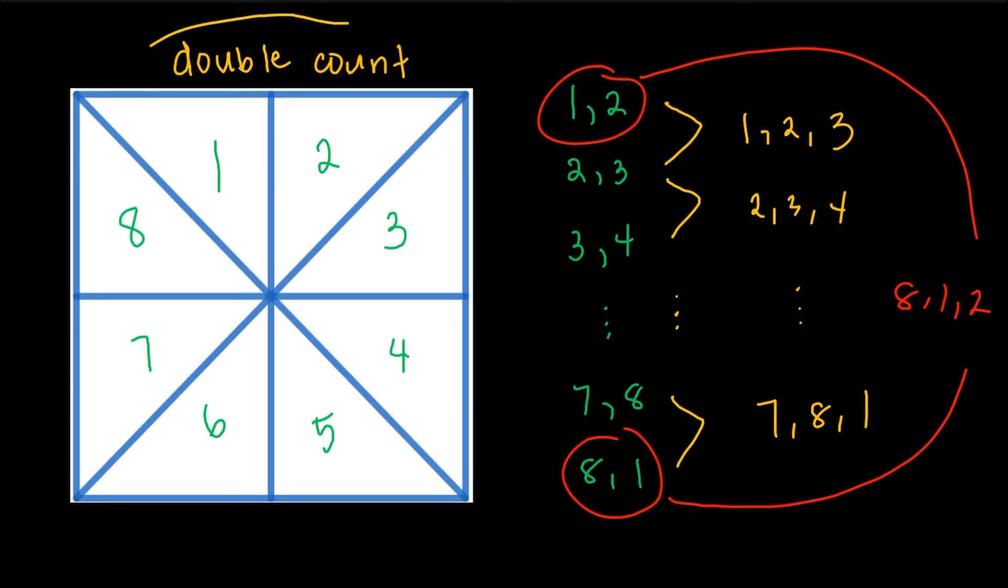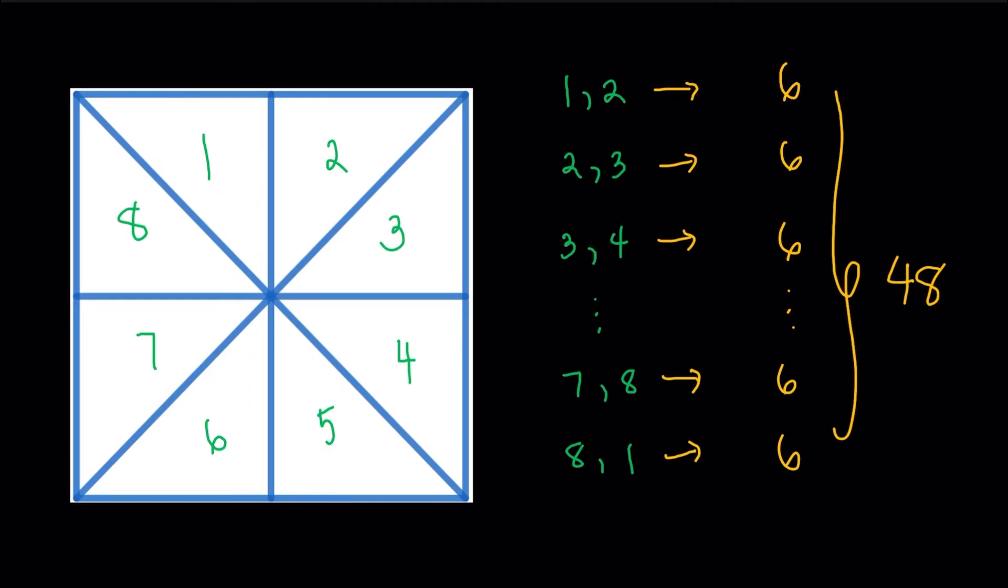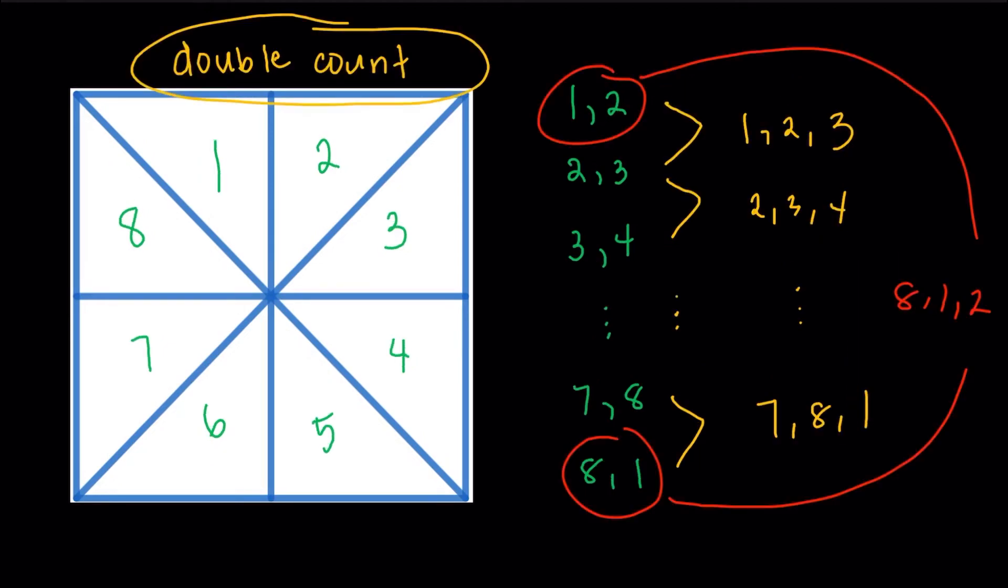So that's to account for double counting. That's probably some of the most common issues when we do kind of listing, we might double count. So always check out, look out for these, because they do happen. Okay? So going back, what we're going to do is, well, we had 48 cases from taking the adjacent pair first and then choosing the third possible triangle.